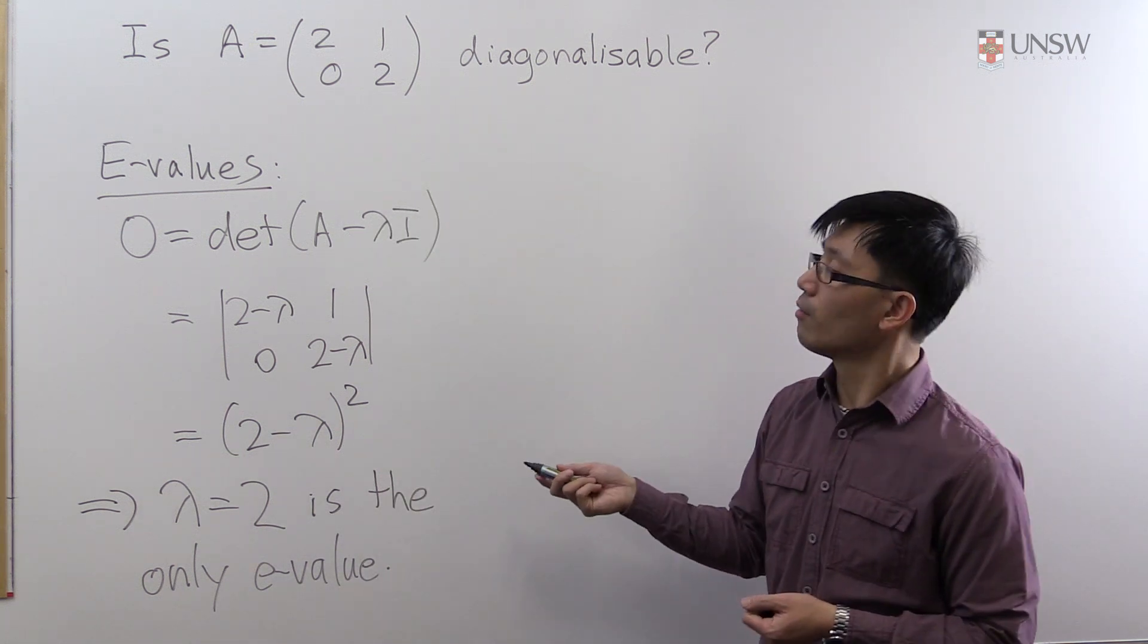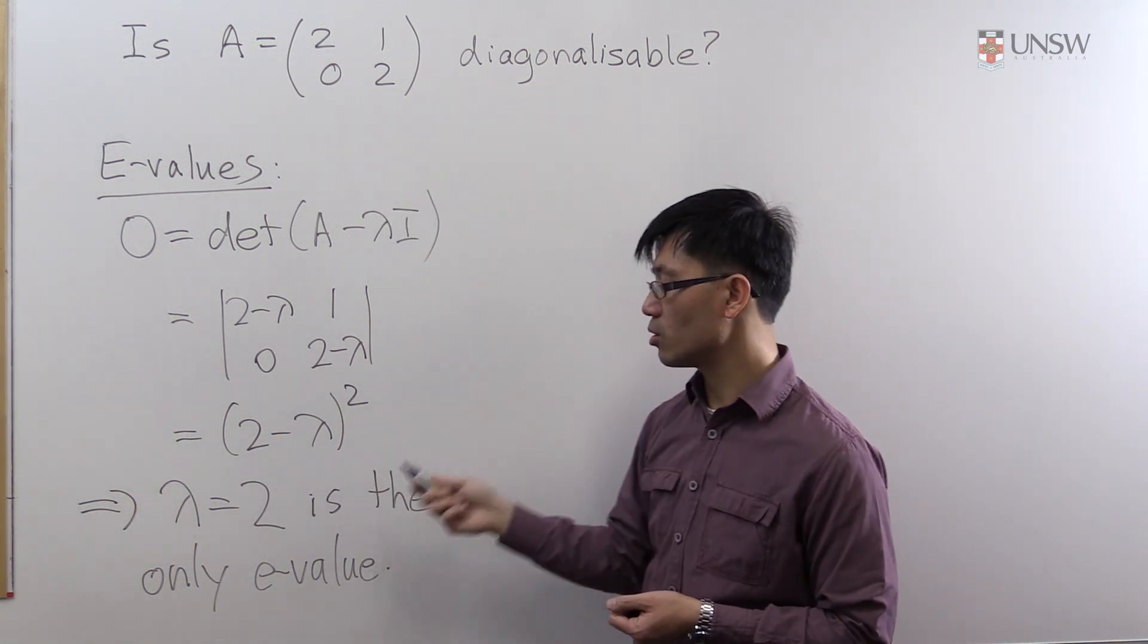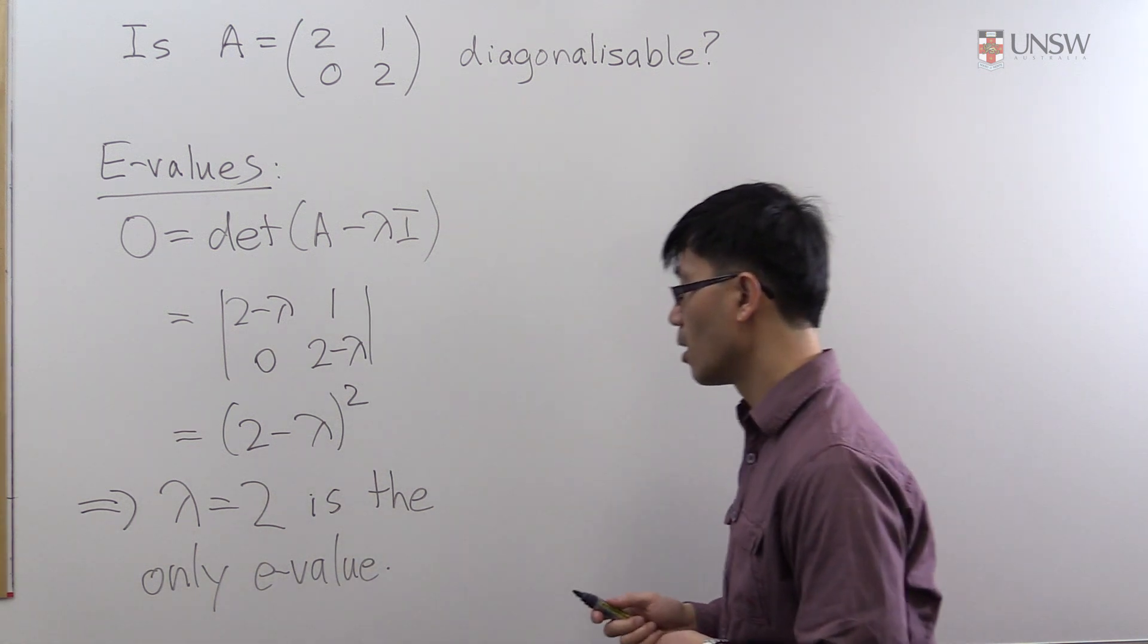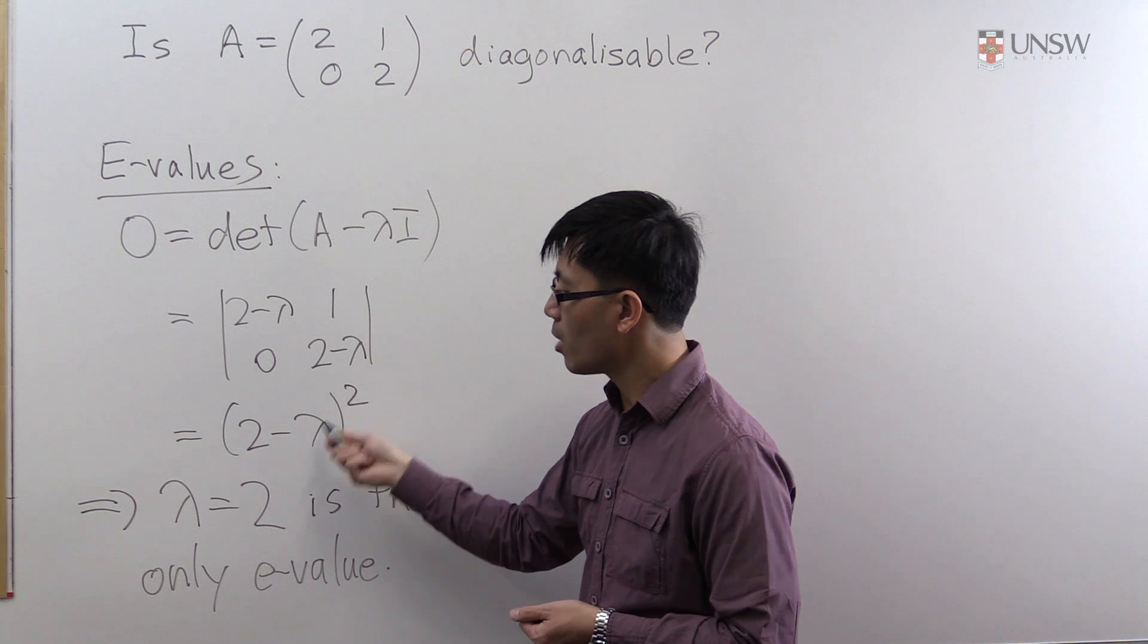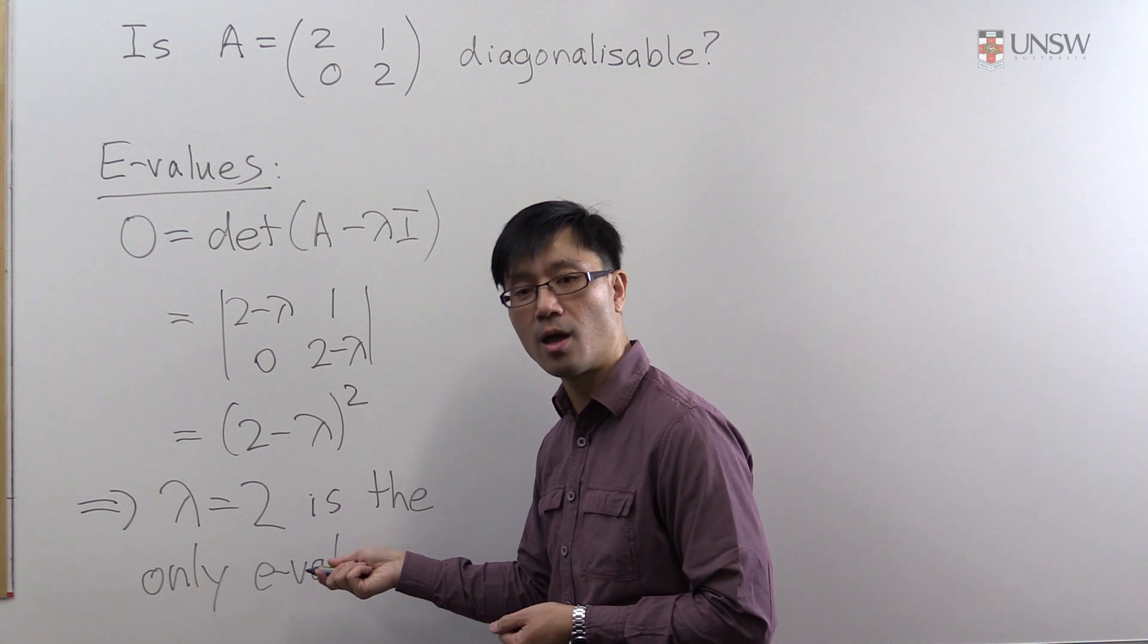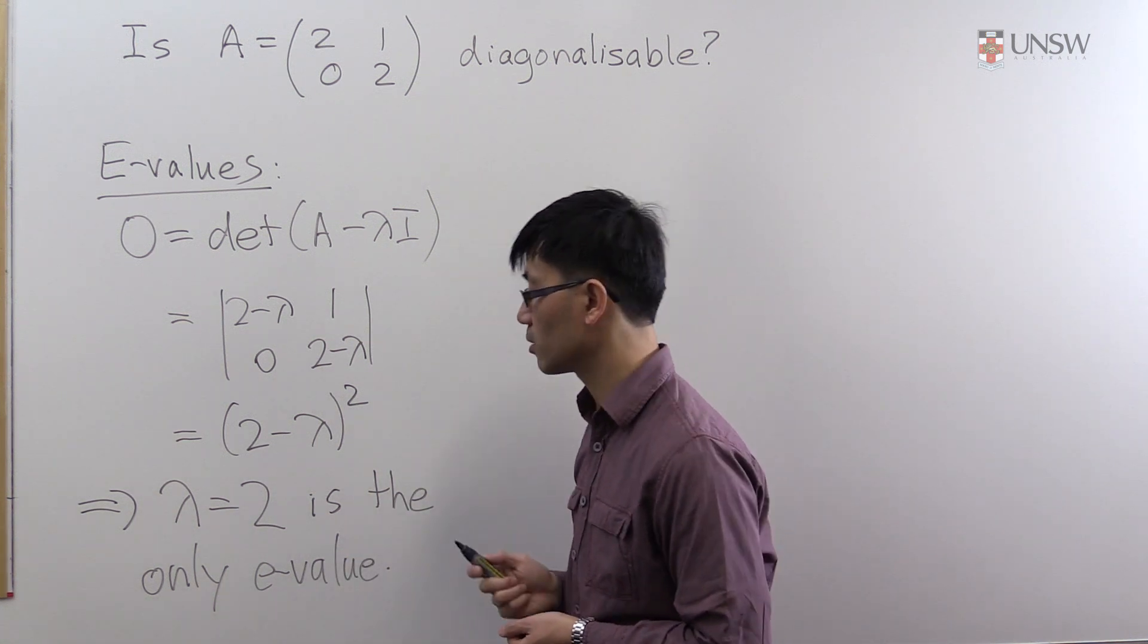So remember, for a 2 by 2 matrix if you get two distinct eigenvalues you know straight away that it's diagonalizable. But here you have a multiple root, they're not distinct, so you still can't tell. We have to go one step further and actually compute the eigenvectors.